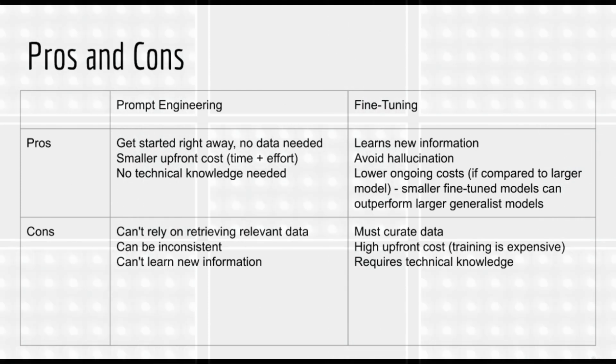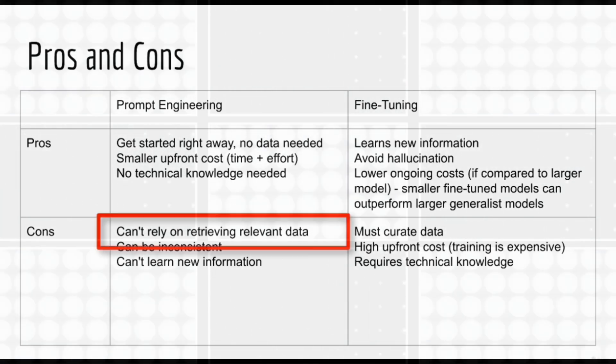But there are some cons to prompt engineering as well. One disadvantage of prompt engineering is that you can't rely on it to retrieve the relevant data it needs to answer your query. The knowledge stored in an LLM isn't like the knowledge stored in a database. Another disadvantage of prompt engineering is that LLMs can forget what they have learned in the past. So even if something was in the training set, it may be forgotten by the time training is complete. Another well-known disadvantage is that LLMs can hallucinate, or make up facts, and more importantly, sound confident when doing so, which tricks you into thinking that it's the truth.